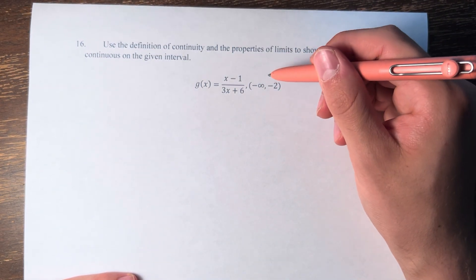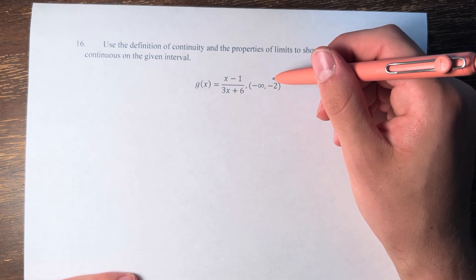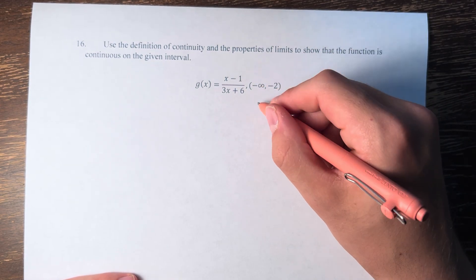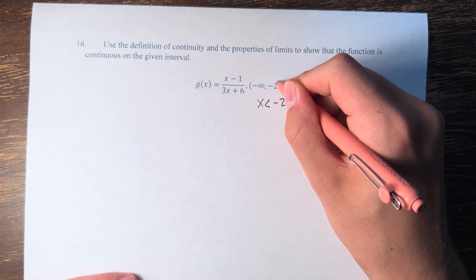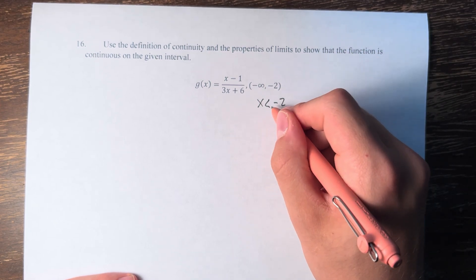So first, let's rewrite this. This is all values of x that are less than negative 2, and it's not including negative 2 since we have a parentheses, so it's not less than or equal.